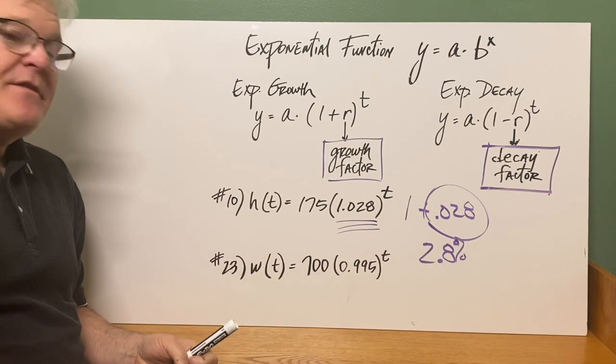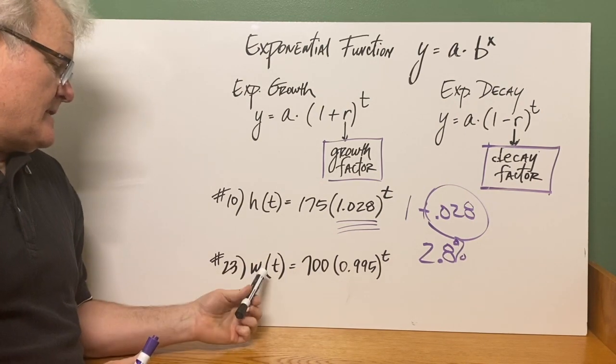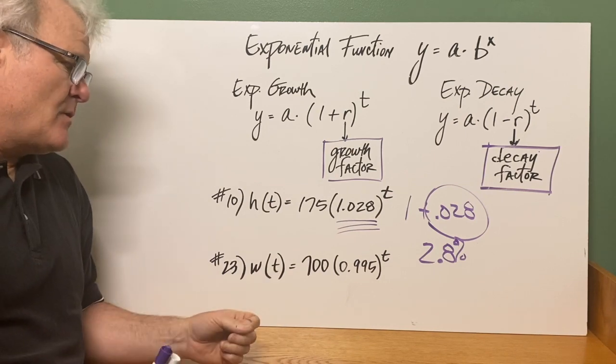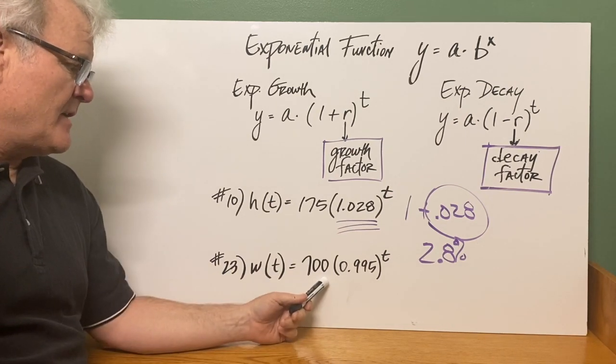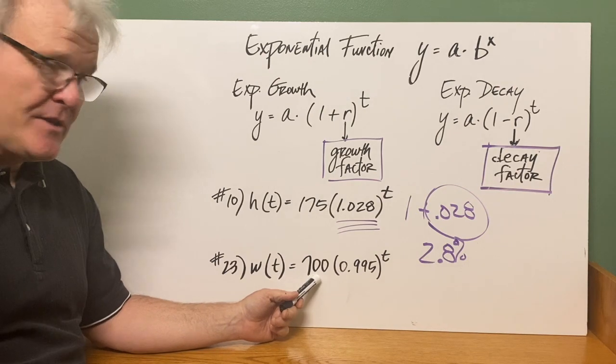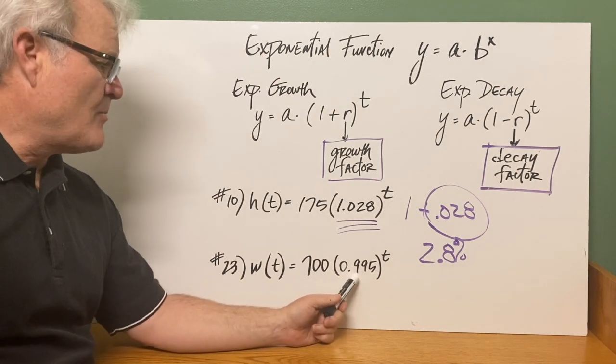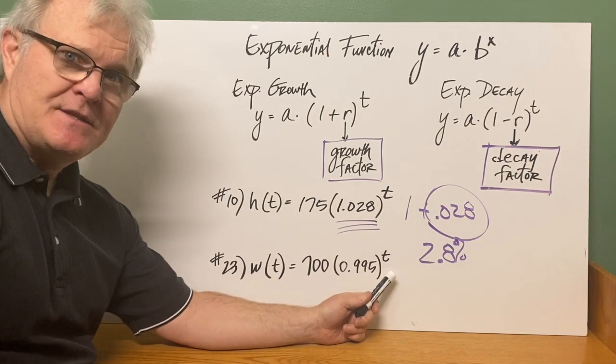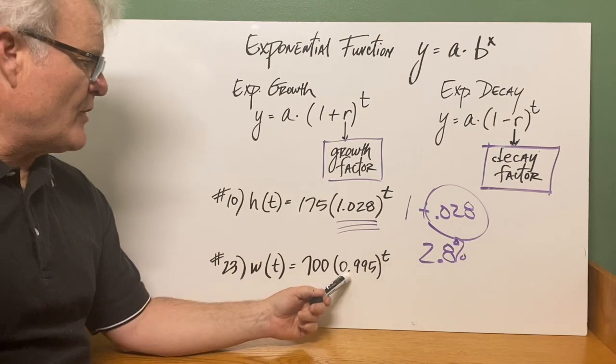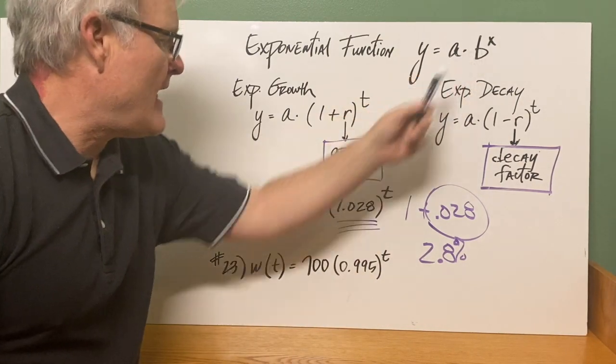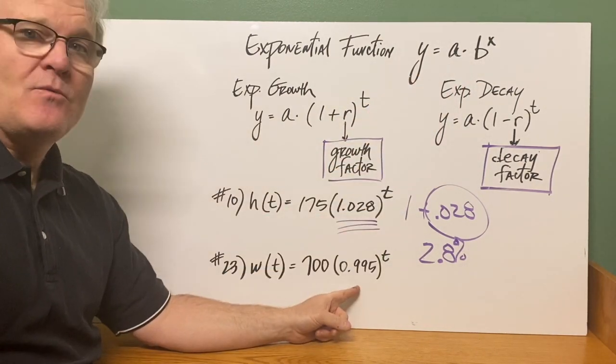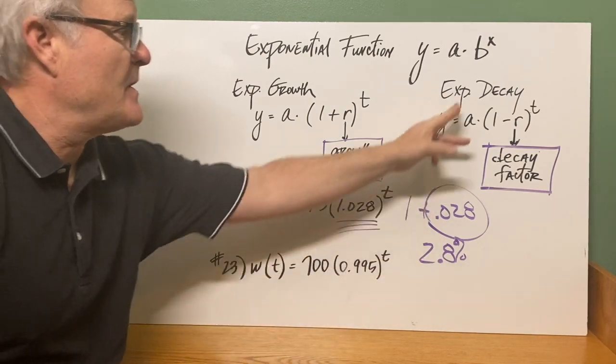For number 23, this one is written, it's the w of t equals 700. Now this would be your initial value, the initial amount, times 0.995 raised to the t power. So for this one, you're looking at the b value, and you're noticing that this is less than 1. So this has to be an exponential decay.